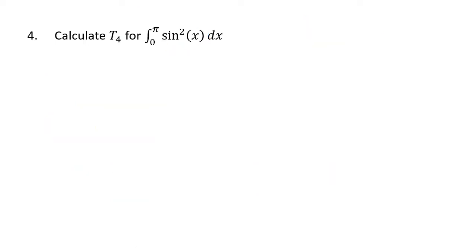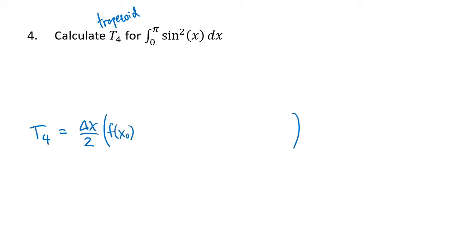Next up we're using T, which stands for trapezoid. We're no longer finding areas of rectangles — we're finding areas of trapezoids, so the formula is a bit different. We start with Δx/2 multiplied by the sum of function values: f(x₀) + 2f(x₁) + 2f(x₂) + 2f(x₃) + f(x₄). The pattern is that inside the parentheses we have twos everywhere except at the very beginning and at the very end.